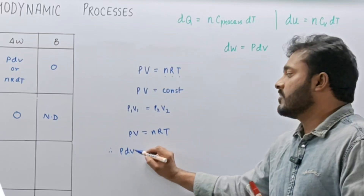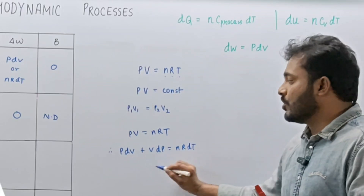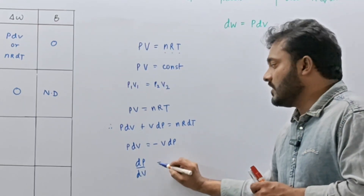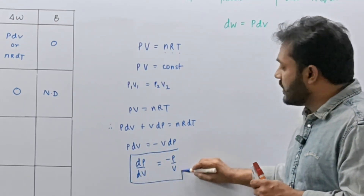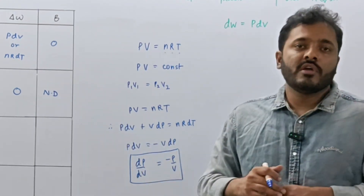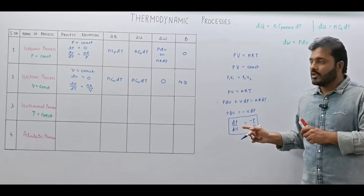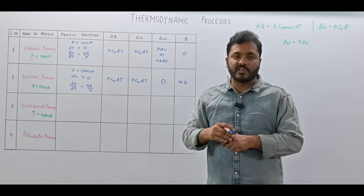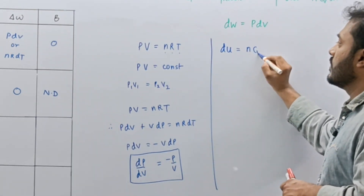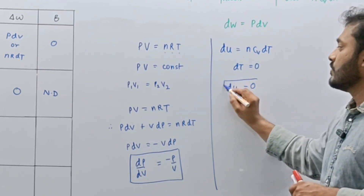Writing PV equals NRT in differential form: P dV plus V dP equals NR dT. If dT equals 0, then P dV equals minus V dP, and dP/dV equals minus P/V. This is the differential equation for the isothermal process; the slope of the PV curve at any point is minus P/V. Since DU equals N CV DT and dT equals 0, DU equals 0 for the isothermal process.